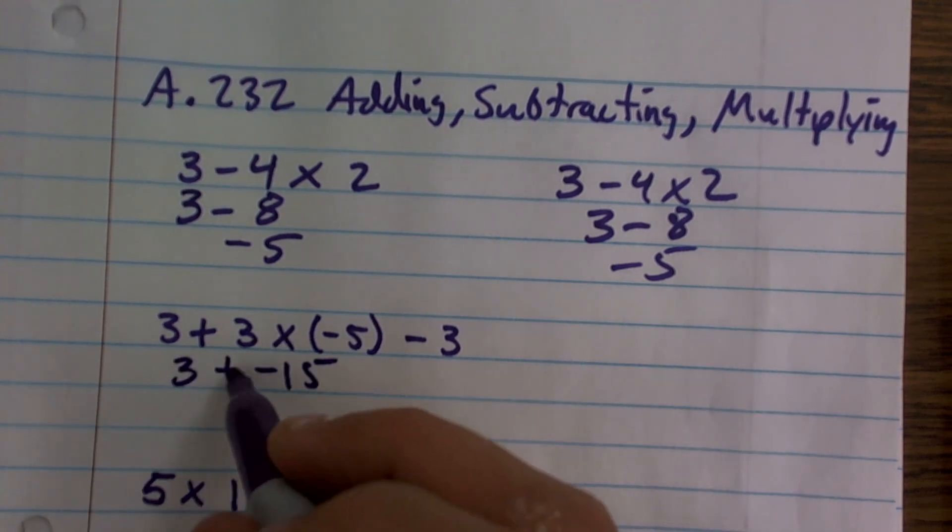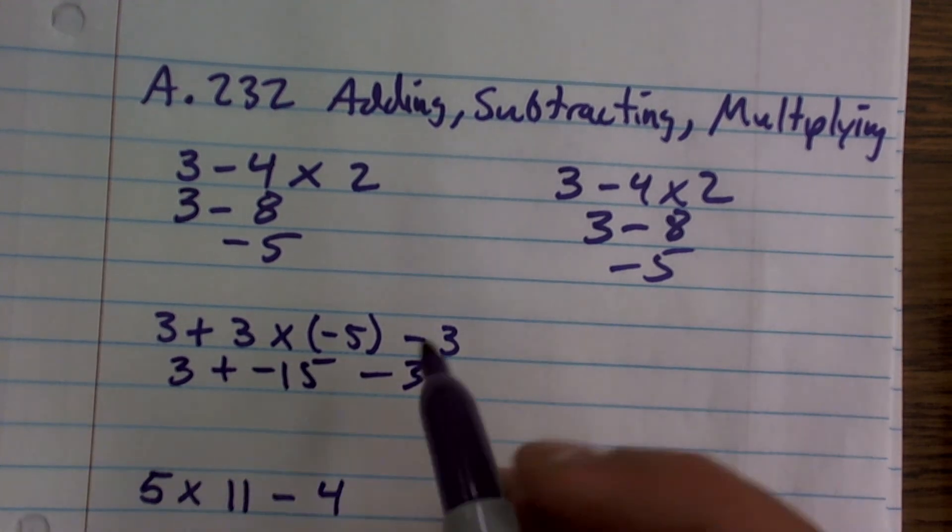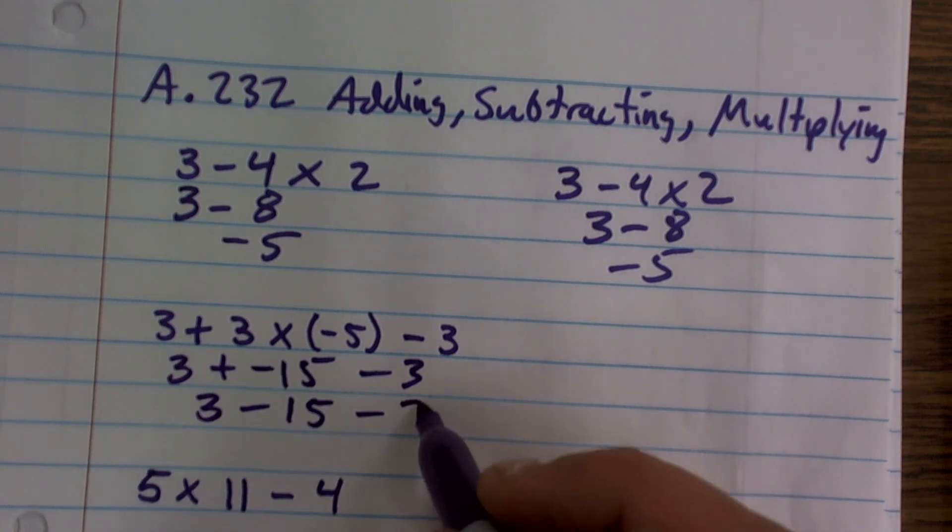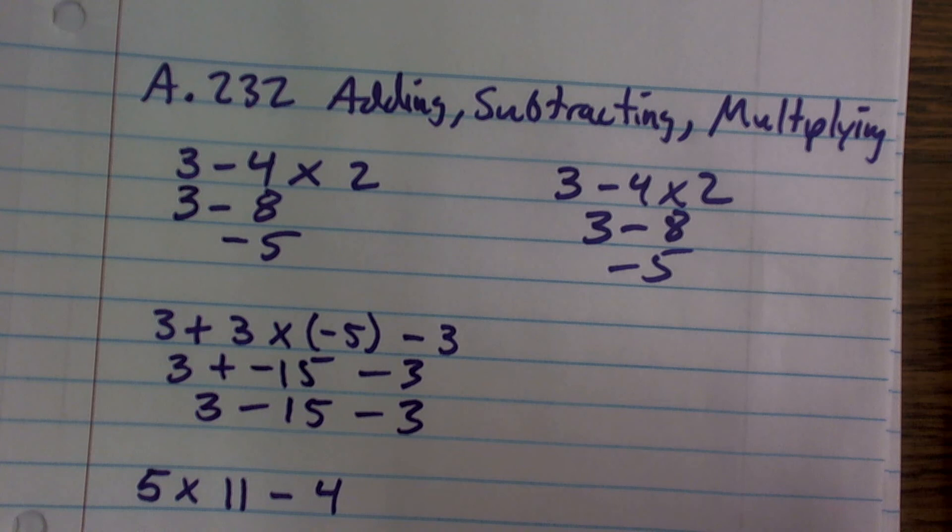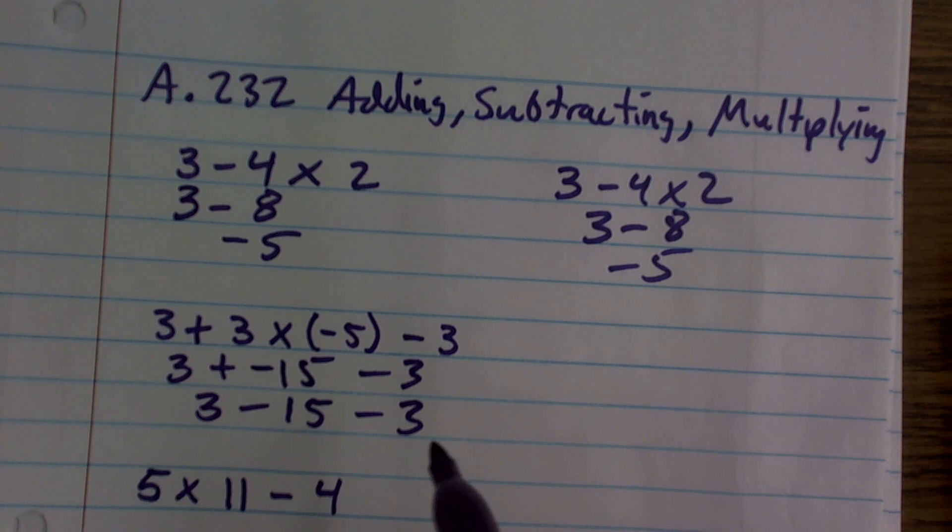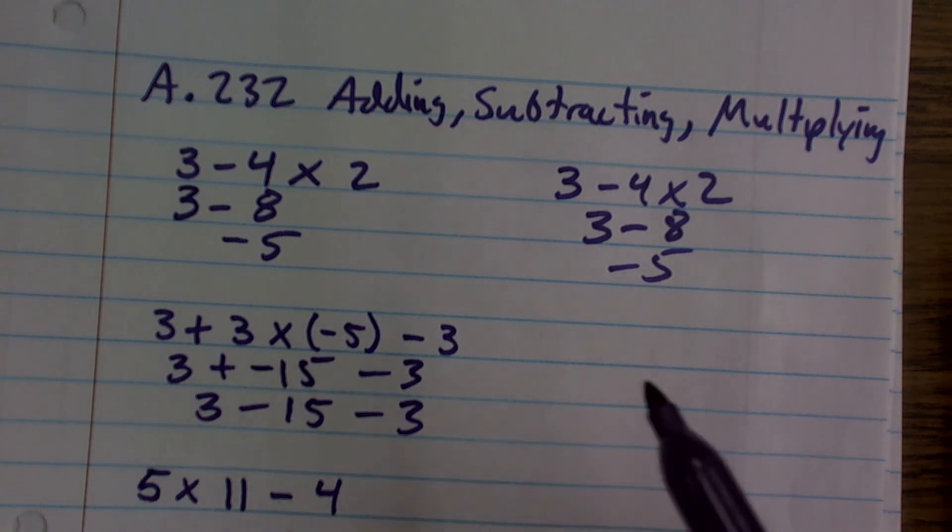So I have 3 plus negative 15 minus 3. Well, I can just rewrite that, and instead of plus a negative, I can just write 3 minus 15 minus 3. So therefore, working from left to right, 3 minus 15 is going to give me negative 12, and then subtracting another 3 from there is going to give me negative 15.